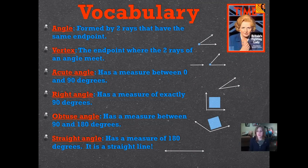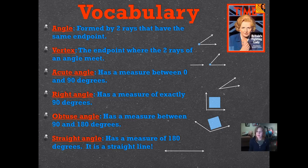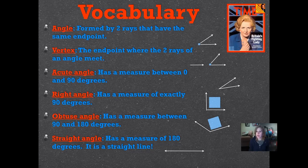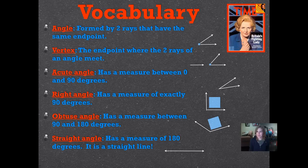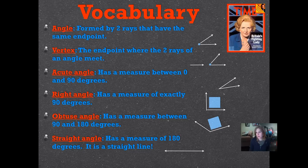Here is your vocabulary for the evening. An angle is formed by two rays that have the same endpoint, and I gave you a little picture of that to the right. Angles are all different sizes, and we're going to look at a lot of the different sizes. The vertex is the endpoint where the two rays of an angle meet.